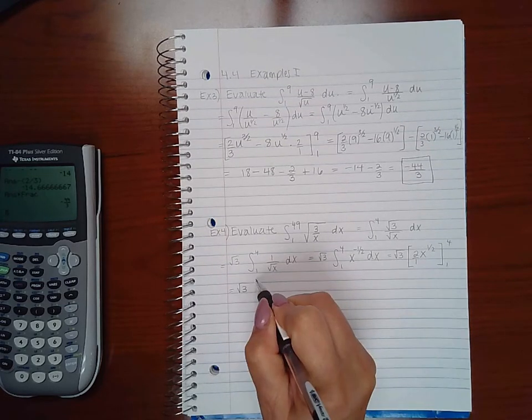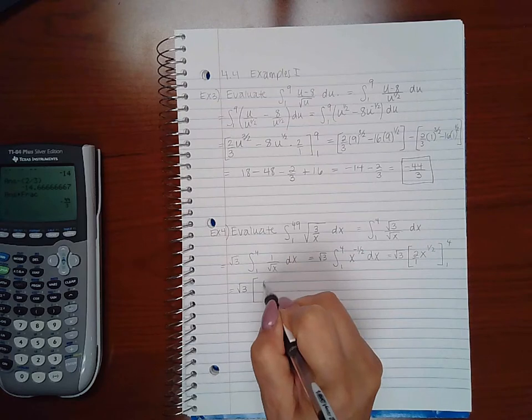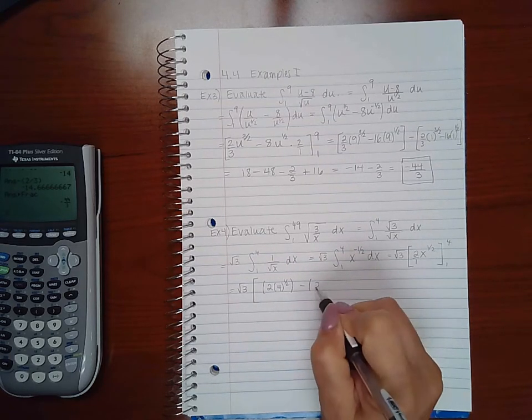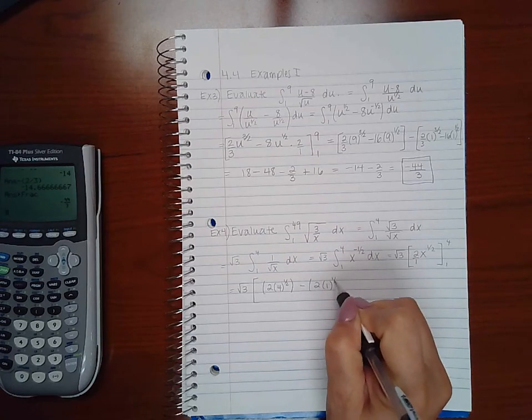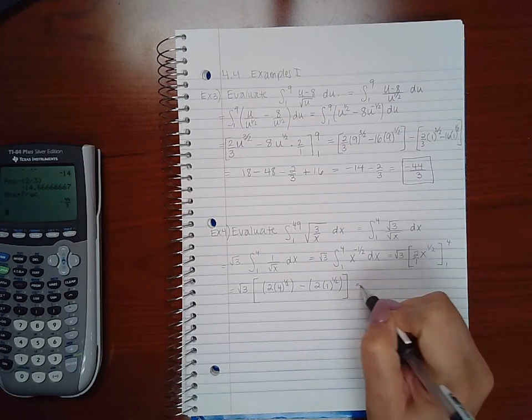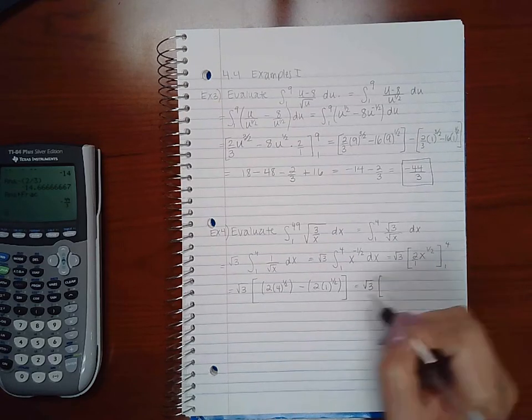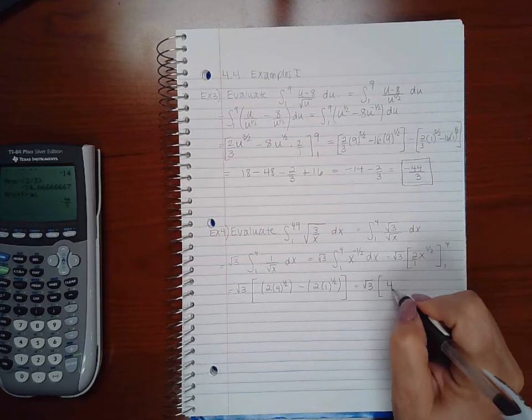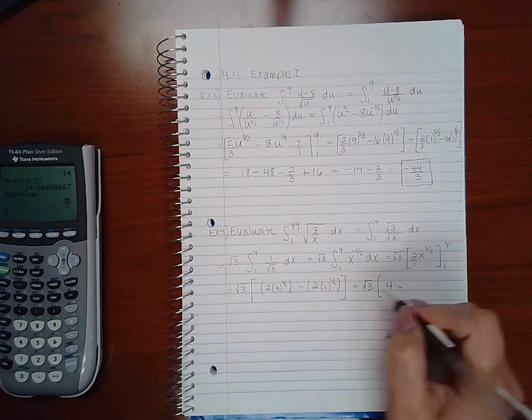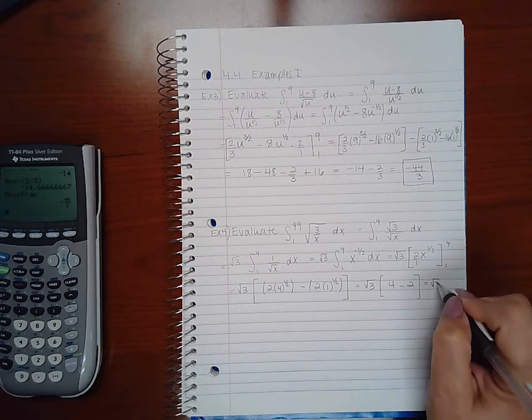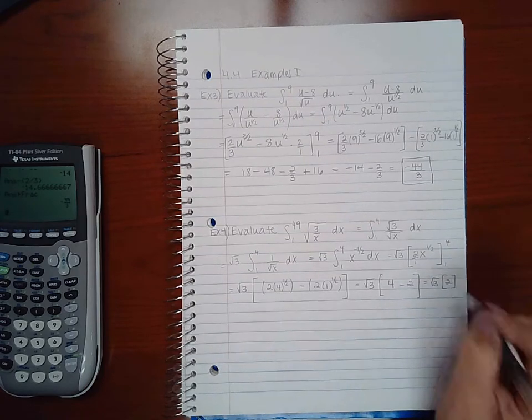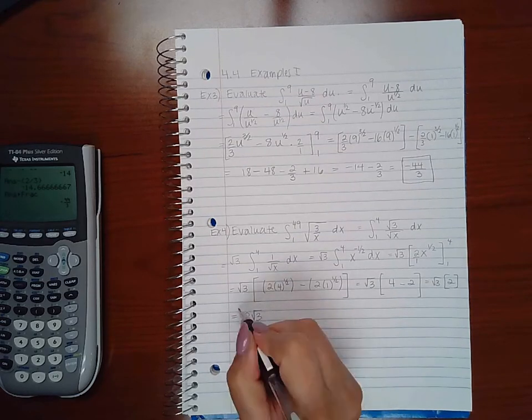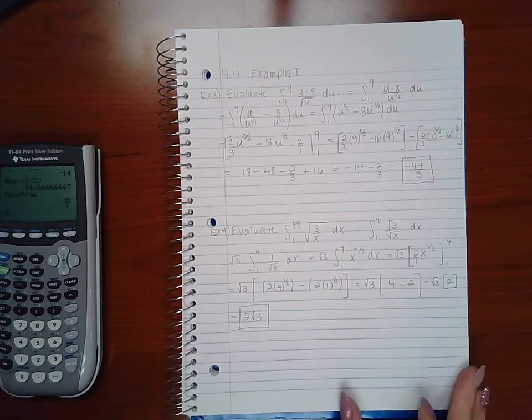So I end up with the square root of 3 times 2, 4 to the 1 half minus 2, 1 to the 1 half. So I get the square root of 3 times the square root of 4 is 2 times 2 is 4. The square root of 1 is 1 times 2 is 2. So I end up with the square root of 3 times 2 or just 2 square root of 3. And that would be the value there.